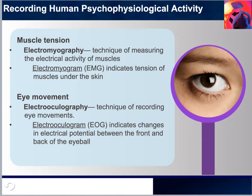These two measures are of somatic nervous system activity. For muscle tension, electromyography (EMG) is a technique for measuring the electrical activity of muscles. It measures how each muscle fiber contracts in an all-or-none fashion when activated by the motor neuron that innervates it. Movement results when a large number of fibers contract at the same time. Anxious individuals typically display high resting levels of tension in their muscles, which is why psychophysiologists use it as an indicator of psychological arousal.